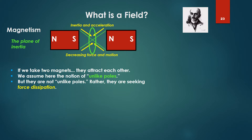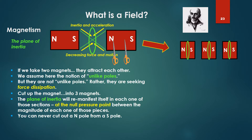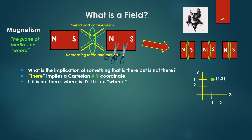If we take two magnets, as we saw, they attract each other. We assume traditionally that we're dealing with unlike poles: north attracts south, south attracts north. But as we've just seen, they're not really unlike poles. Rather, we are seeking force dissipation. Cut up the magnet into three magnets; the plane of inertia will re-manifest itself in each one of these sections at the null pressure point. You can never cut out a north pole from a south pole. So what's the implication of something that is there but not there? There implies a Cartesian XY coordinate. But if it's not there — where is it? It is nowhere.